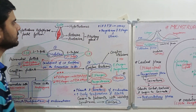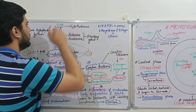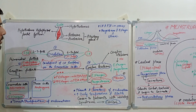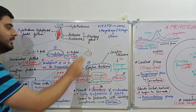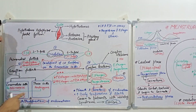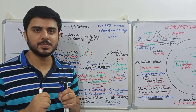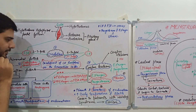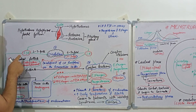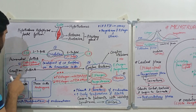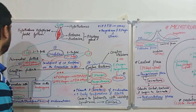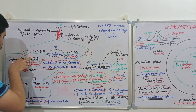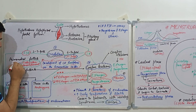As we discussed in males, in females also we have a hypothalamus secreting gonadotropin-releasing hormone. This hormone acts on the anterior pituitary, causing the release of follicle-stimulating hormone and luteinizing hormone. Follicle-stimulating hormone, as the name suggests, stimulates follicles. It converts the primordial follicle into a Graafian follicle. Somewhere between the primordial follicle and Graafian follicle, we also get a follicular stage known as the secondary follicle.